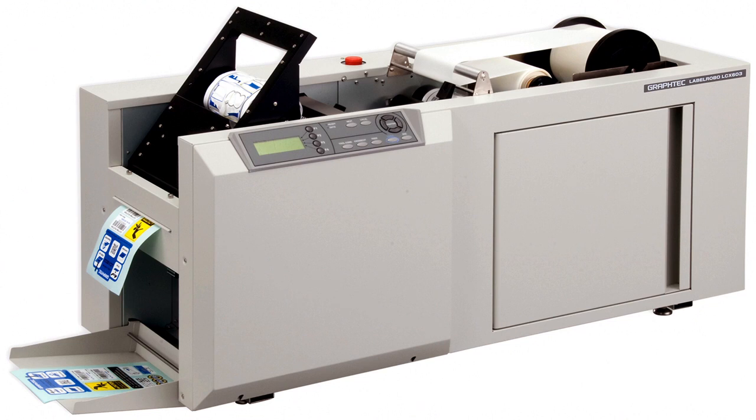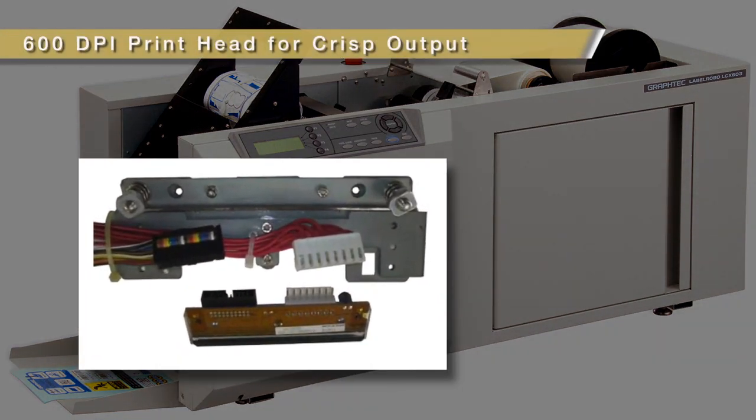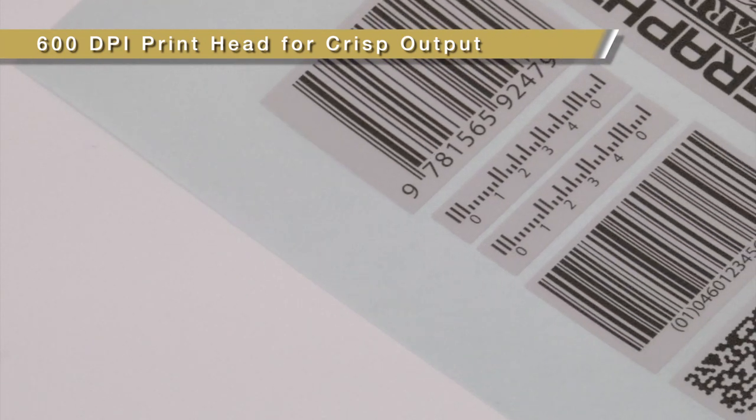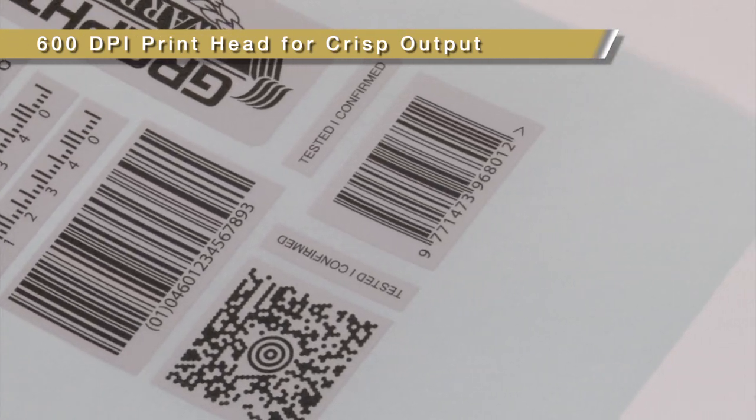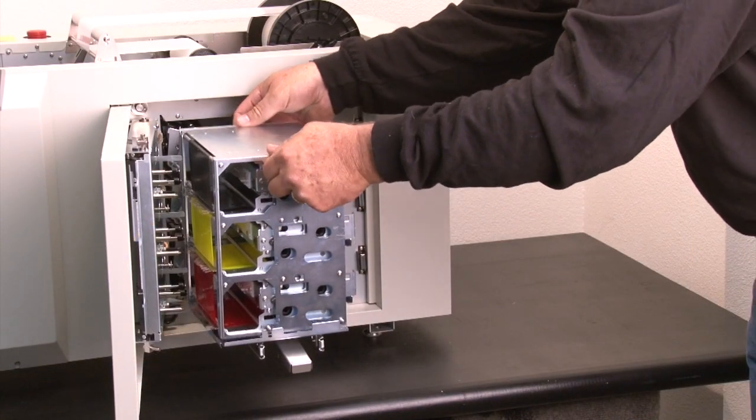Built with ruggedness in mind, the Graftek LCX603 design brings features such as an advanced thermal head construction with 600 DPI printing for crisp, clear labeling, providing you a higher print quality for the most intricate text, graphics, and barcodes with dead-on accuracy and readability.